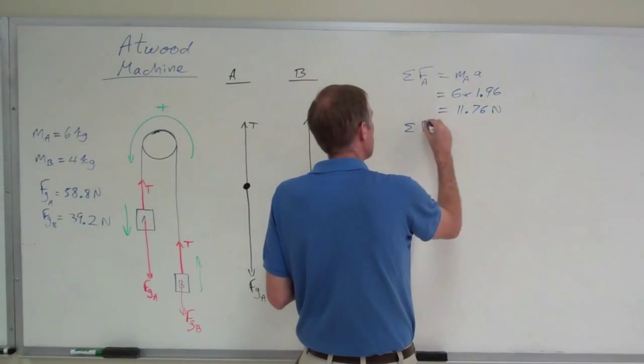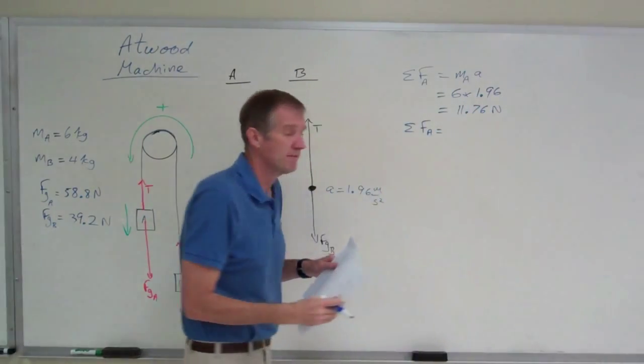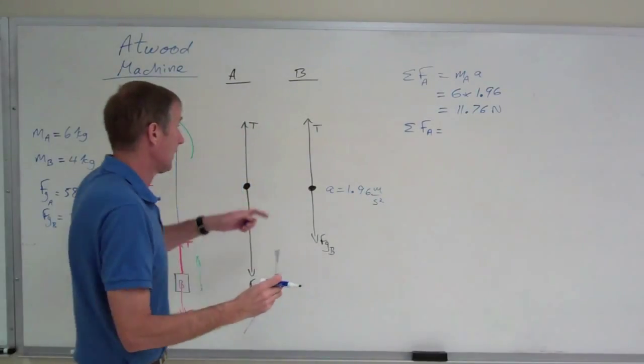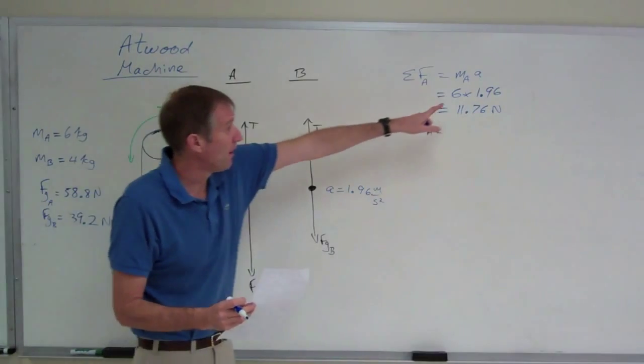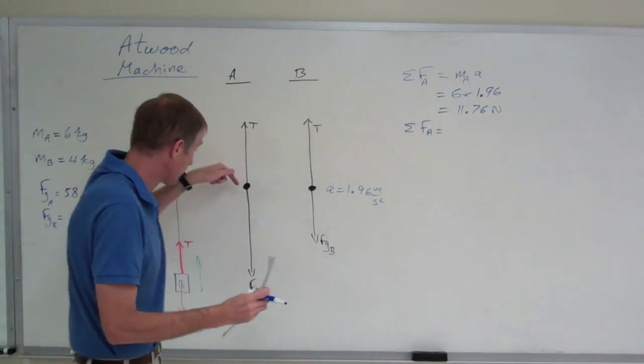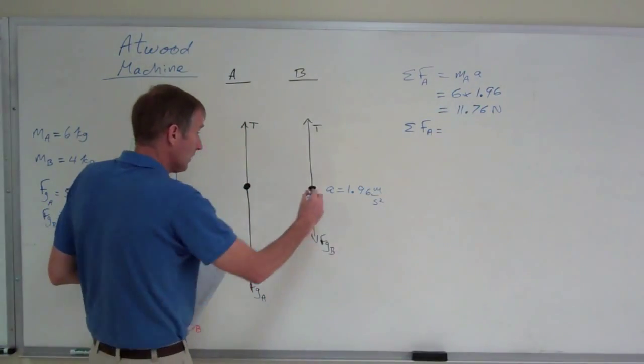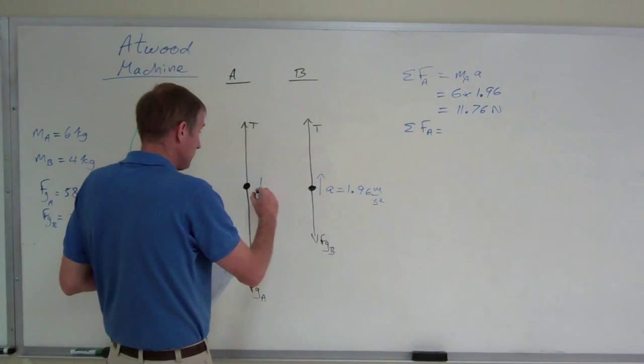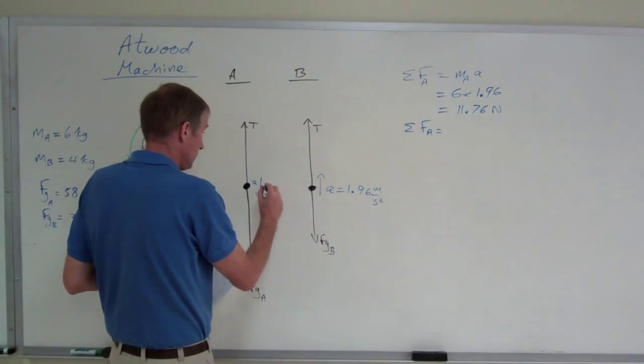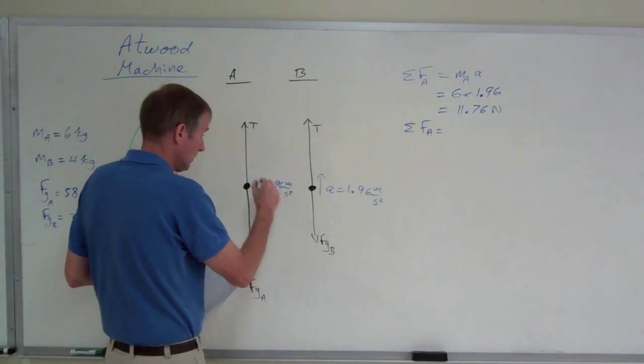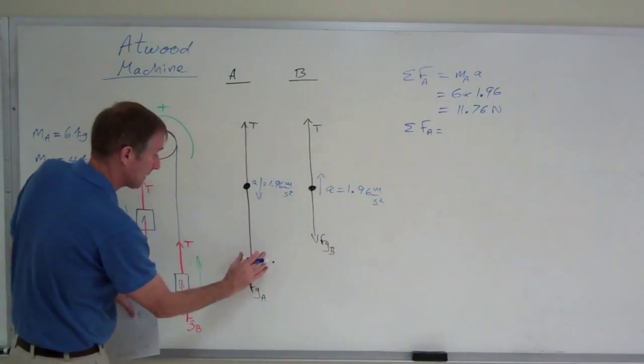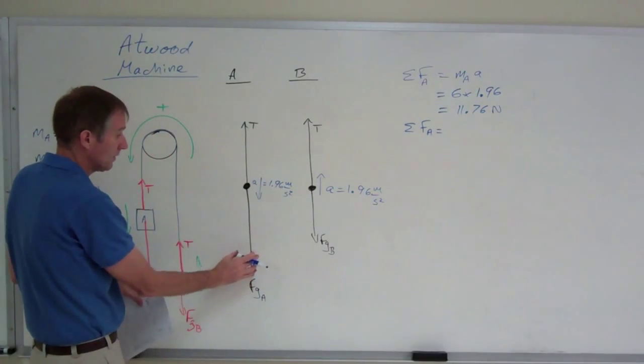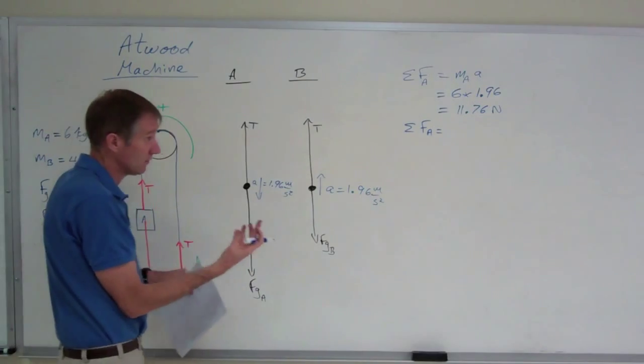Well, what is the net force acting on A? This is where you have to be very, very careful. A accelerates downwards. We're using a positive acceleration, so for A, down is positive. For B, up was positive. For A, down is positive. Weird, because that's the way it accelerates. If I'm going to use a positive, I have to subtract the bigger number minus the smaller number to get a positive acceleration, a positive net force.